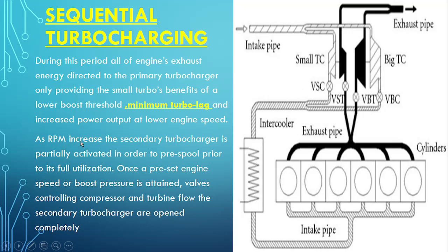As RPM increases, the second turbocharger is partially activated in order to pre-spool prior to full utilization. Once a preset engine speed or boost pressure is attained, the valves controlling compressor and turbine flow to the secondary turbocharger open completely. This is how the system works.